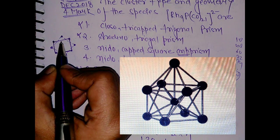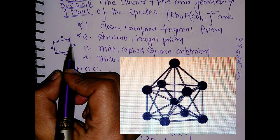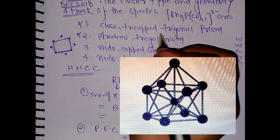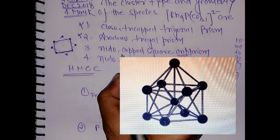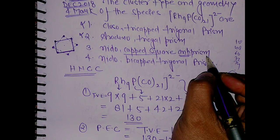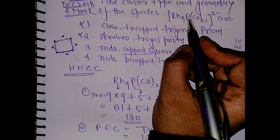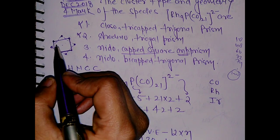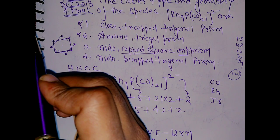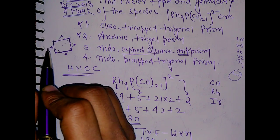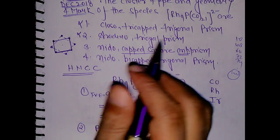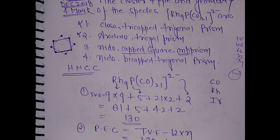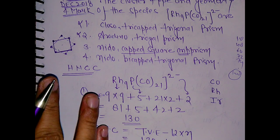That means if we have this extra atom, it is a capped geometry. So the structure will become, as you can see, capped square antiprism. Let's say if we have two phosphorus, then one phosphorus would have been at the bottom face and one at the top, then it would have become bicapped square antiprism. So the structure is just like that.